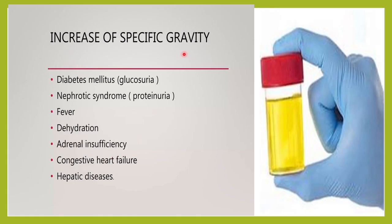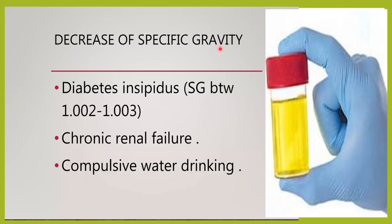Cases of increased specific gravity: concentration of urine will be high, solute concentration might be high or water concentration might be low — for example glycosuria, proteinuria, fever, dehydration, congestive heart failure, hepatic diseases. Decreased specific gravity: concentration of urine is less or water content is high, like in case of diabetes insipidus, chronic renal failure, compulsive water drinking — the specific gravity of urine will be less.